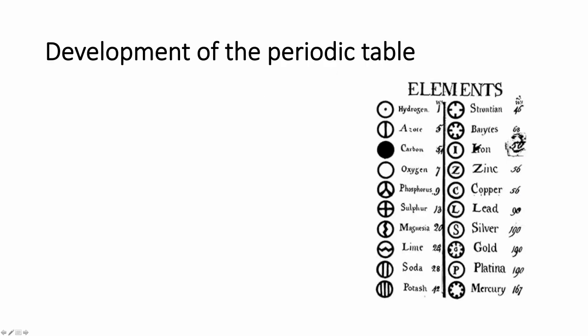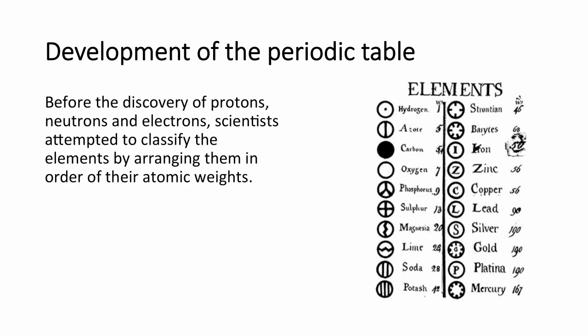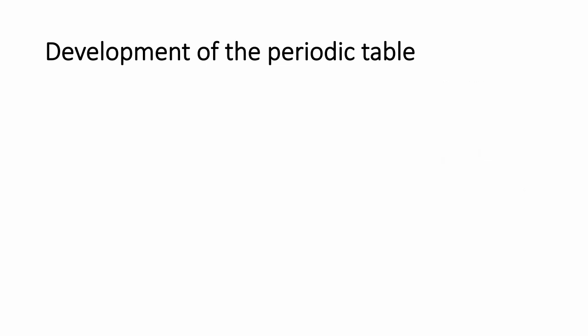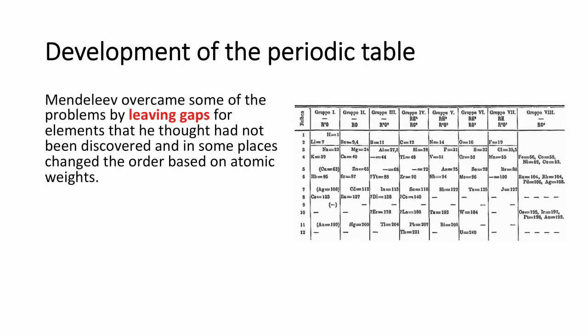Now, the development of the periodic table. Before the discovery of protons, neutrons, and electrons, scientists tried to organise elements by arranging them in order of atomic weight. The earliest tables were incomplete, as some elements were placed in inappropriate groups and some elements had not been discovered yet. Dmitri Mendeleev is credited for designing the modern periodic table. His genius was to put things in order of increasing atomic mass and also put them into groups based on their chemical properties — for example, lithium, sodium, potassium, rubidium, caesium all in group 1, because they all react in a similar way and form oxides of a similar formula.